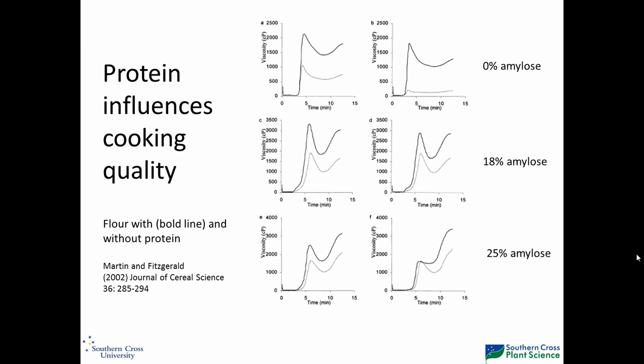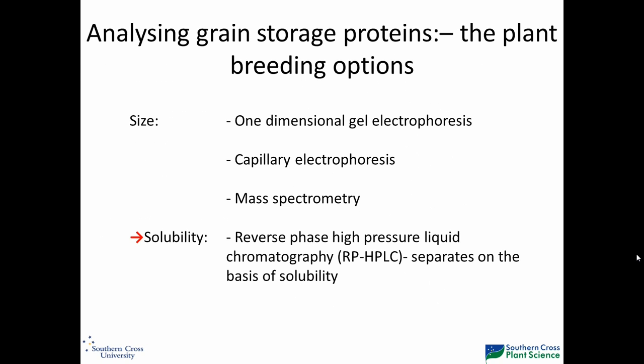It's known that protein actually does influence cooking quality. This is some work done by Melissa Fitzgerald with Margaret Martin as part of the rice breeding program in southern New South Wales. Looking at these RVA curves — the top curve is with protein included; adding protease changes the shape of this viscosity curve. It's different depending on the level of amylose content. So by taking the protein out, it does actually have a significant impact on this instrumental measure of quality.